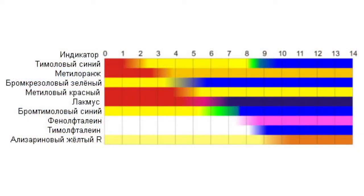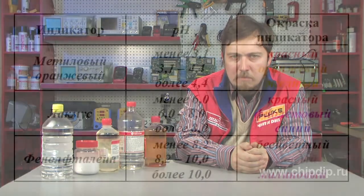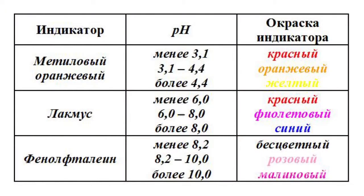To determine the pH of a solution, we use various acid-base indicators or their mixtures called universal indicators. These substances change their color depending on the pH. Today there exist several hundreds of acid-base indicators, synthesized starting from the middle of the 19th century. Some of them, like litmus and phenolphthalein, we already got to know during school chemistry classes. The table shows how the color of indicators changes depending on the pH value.